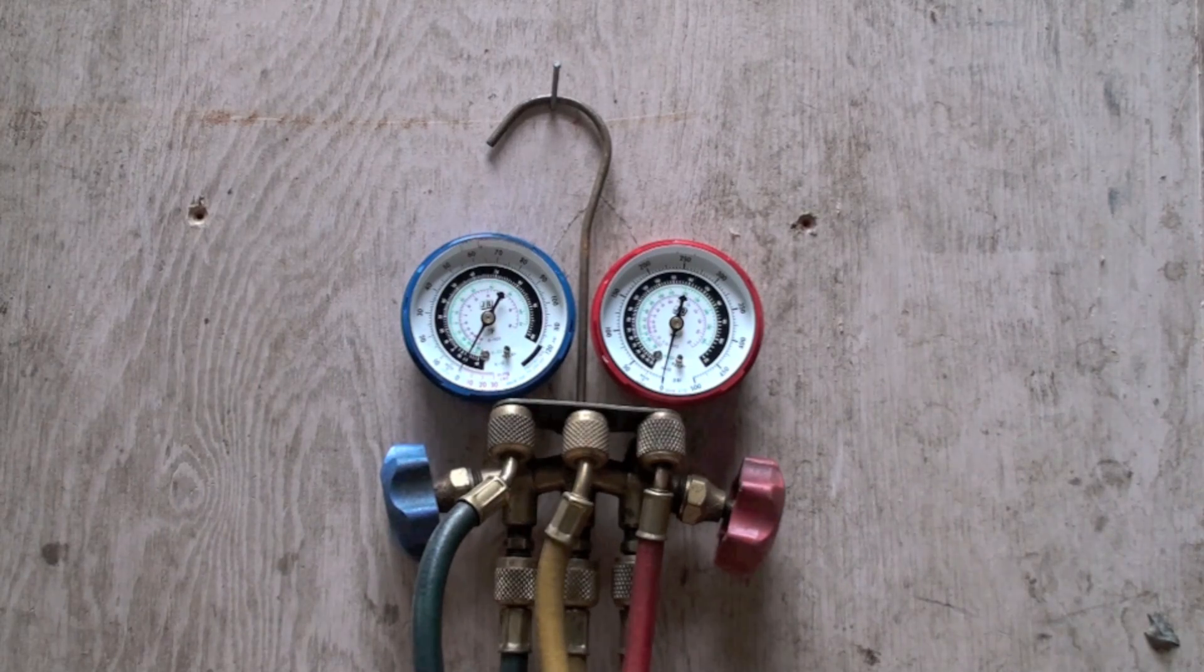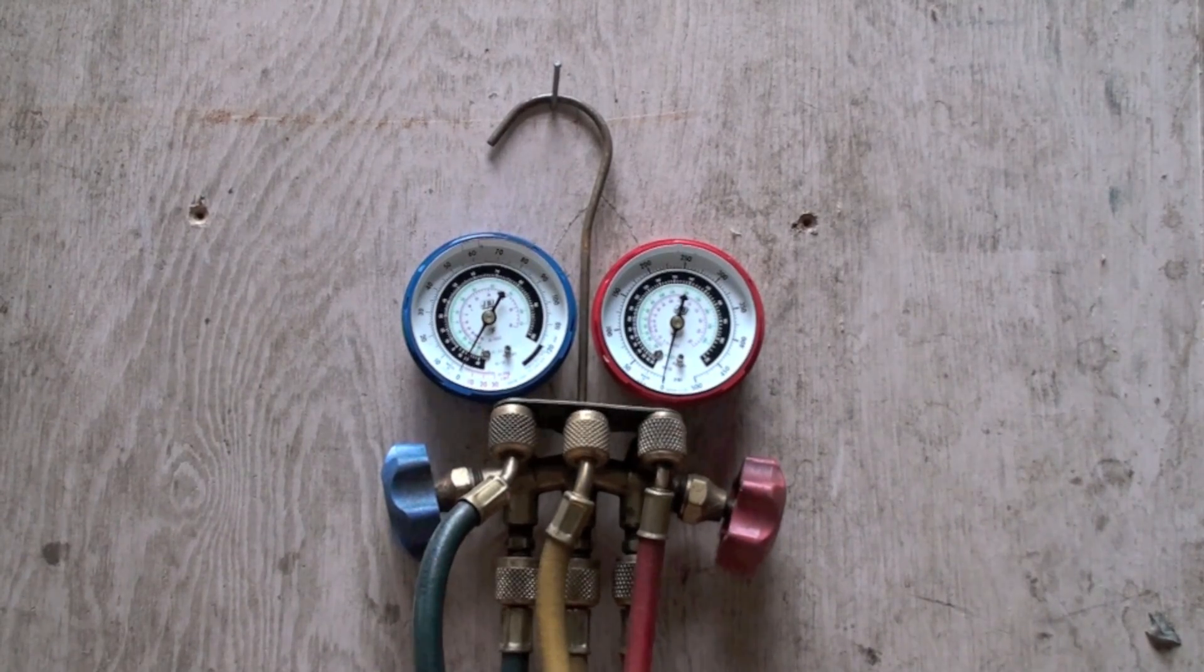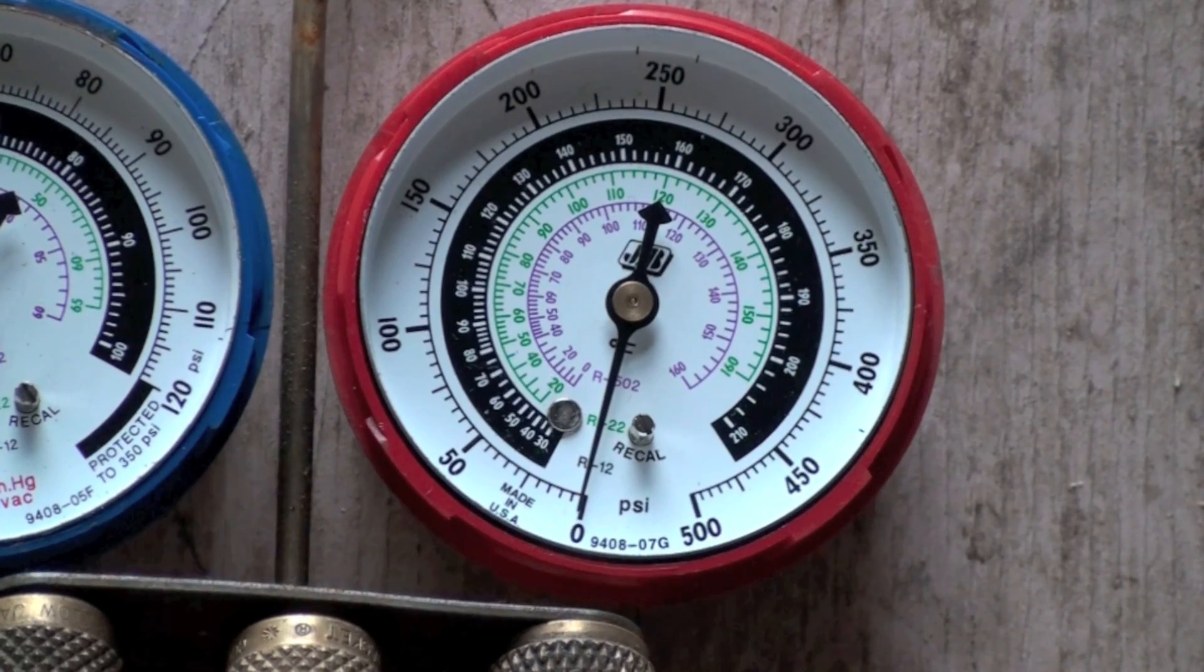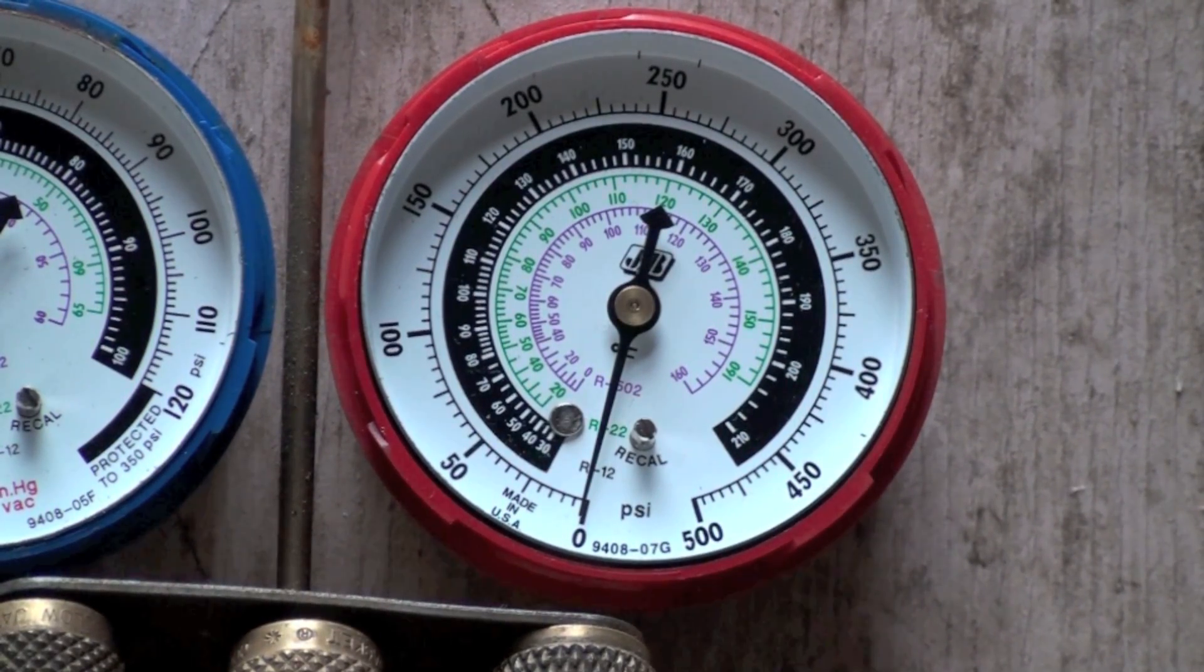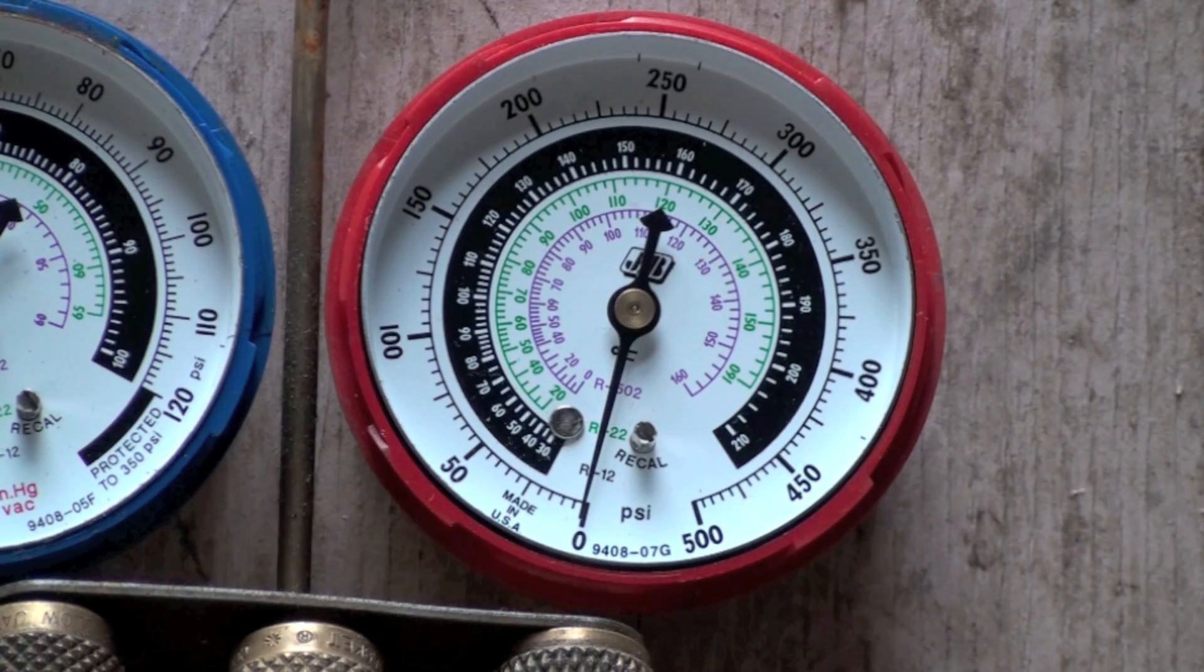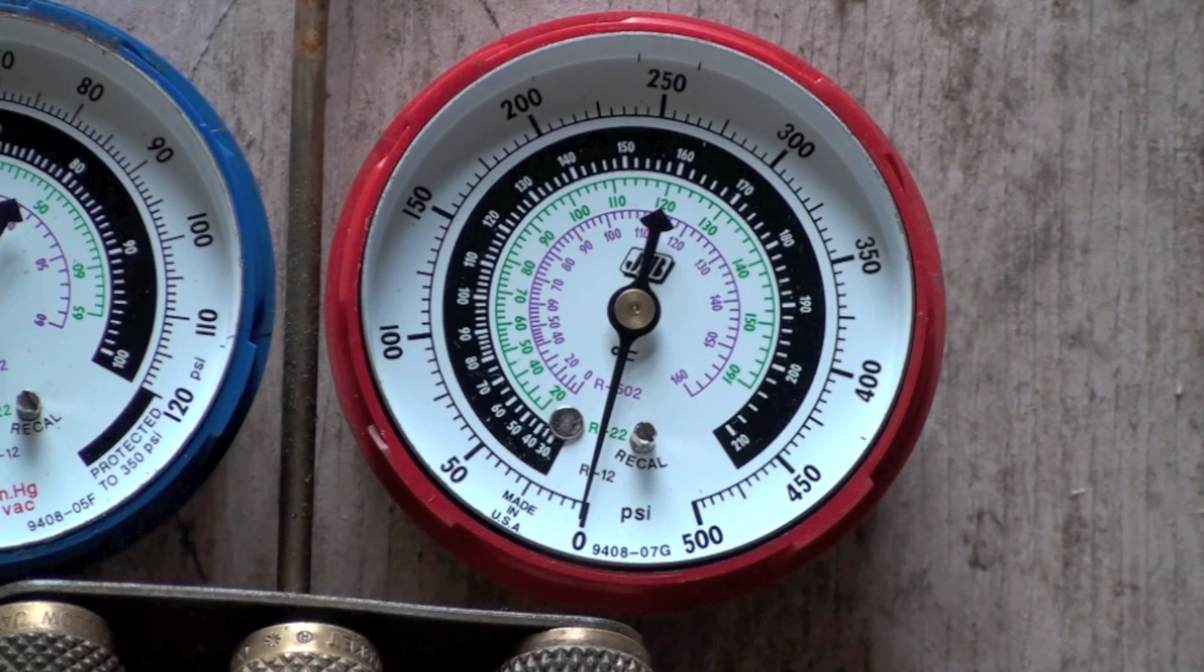Now this is a gauge pressure gauge. It is showing zero psi, that would be zero psig, and that's at atmospheric pressure. So it should always read zero when there's no pressure in the manifold, but that actually is just under 15 pounds absolute pressure.